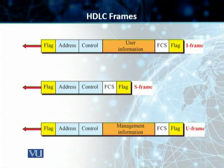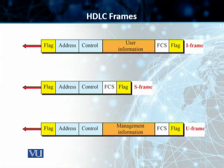Then you have the U-Frames. The information carried by the U-Frame is basically meant to be management information — the information required to manage the link itself. Each frame in HDLC, as shown on the slide, may contain up to six fields.